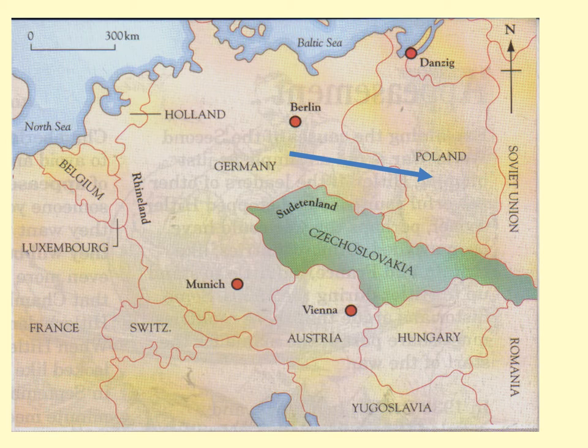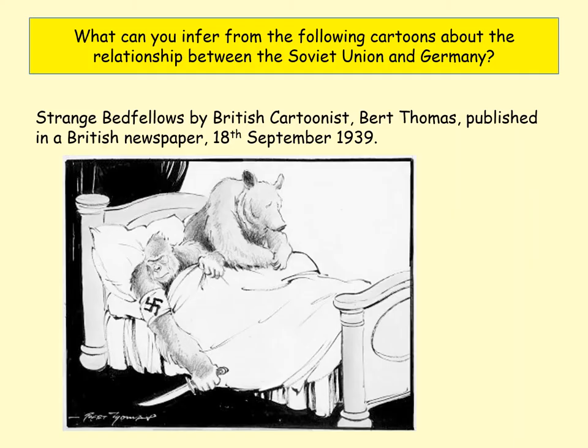Germany's master plan was eventually to invade the Soviet Union — which did happen in June 1941. But Hitler wanted to take each country at a time and avoid the risk of a war on two fronts, which is of course what happened during the First World War. So let's find out a little bit more about what happened with this Nazi-Soviet Pact.